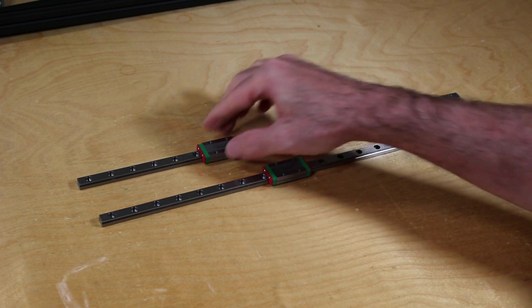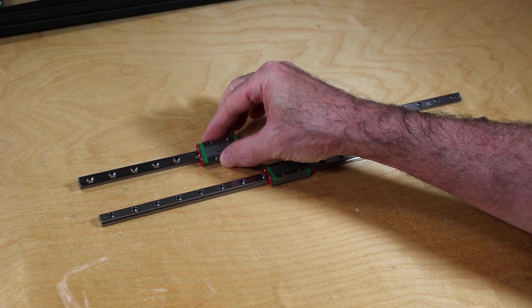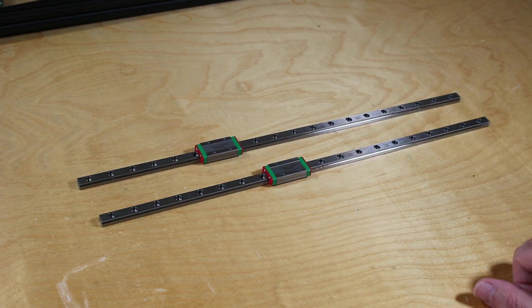These HIWIN rails are going into a Voron 2.4 3D printer that I'm building.